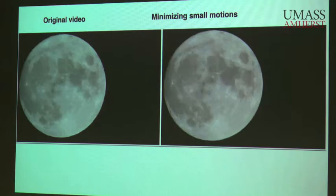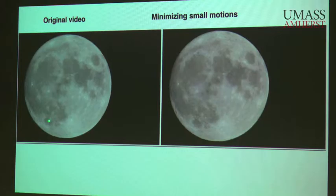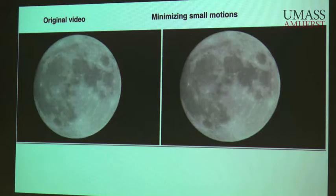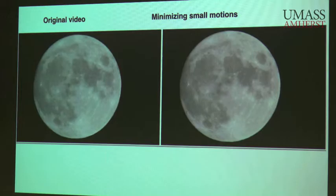You can also minimize motions by doing the opposite: minimizing the phase changes instead of amplifying them. One potential application is an astronomical image of the moon through a turbulent Earth atmosphere, where the motion-minified version reduces the atmospheric turbulence blurring. There are many other ways to solve this problem and we haven't done a side-by-side comparison, but it's a place to explore this idea.